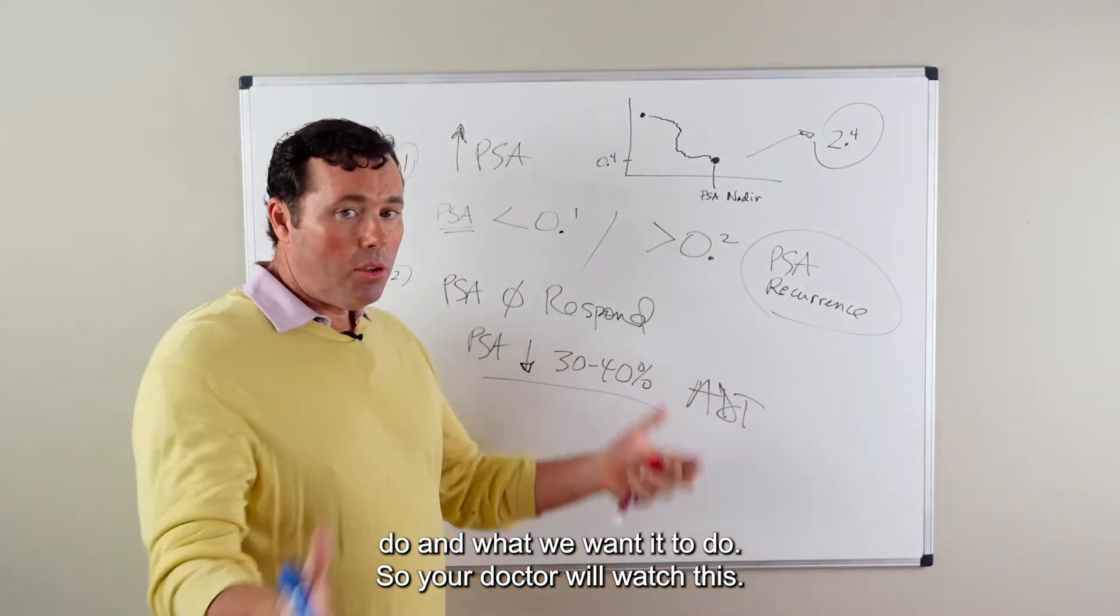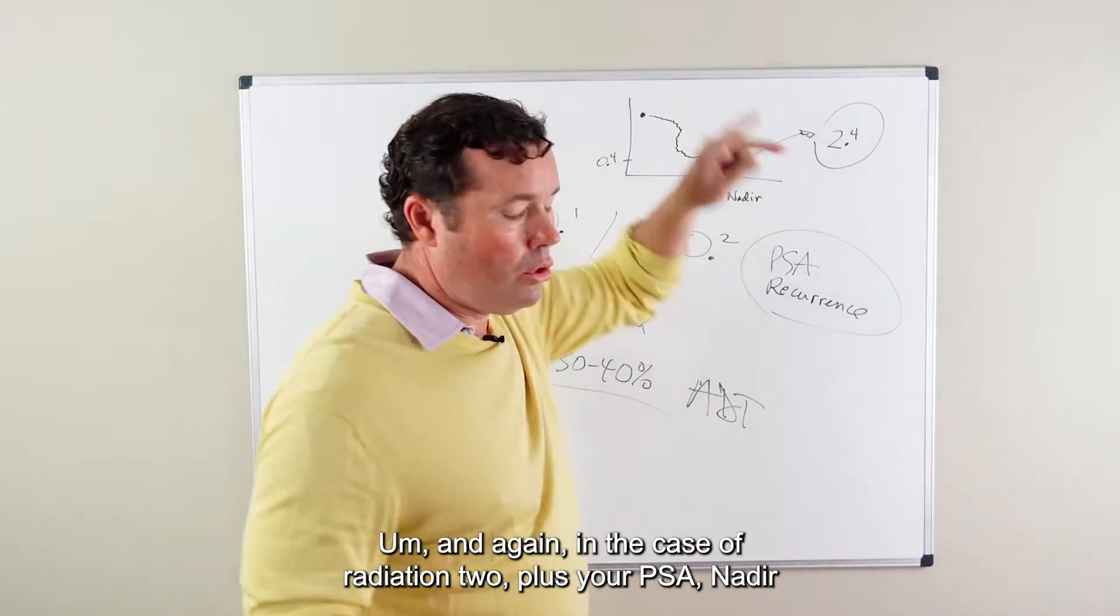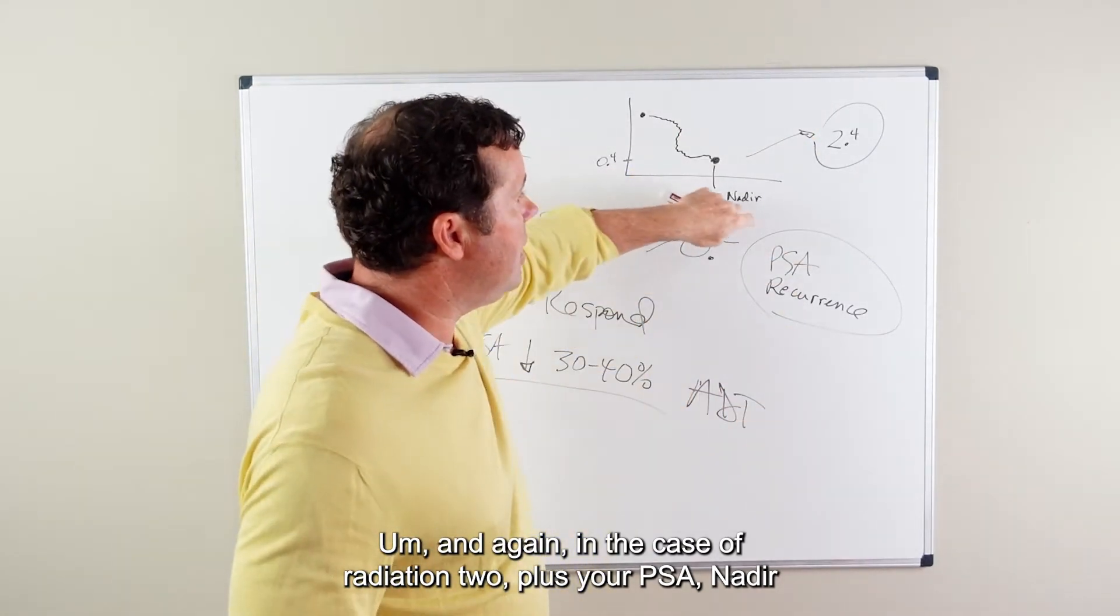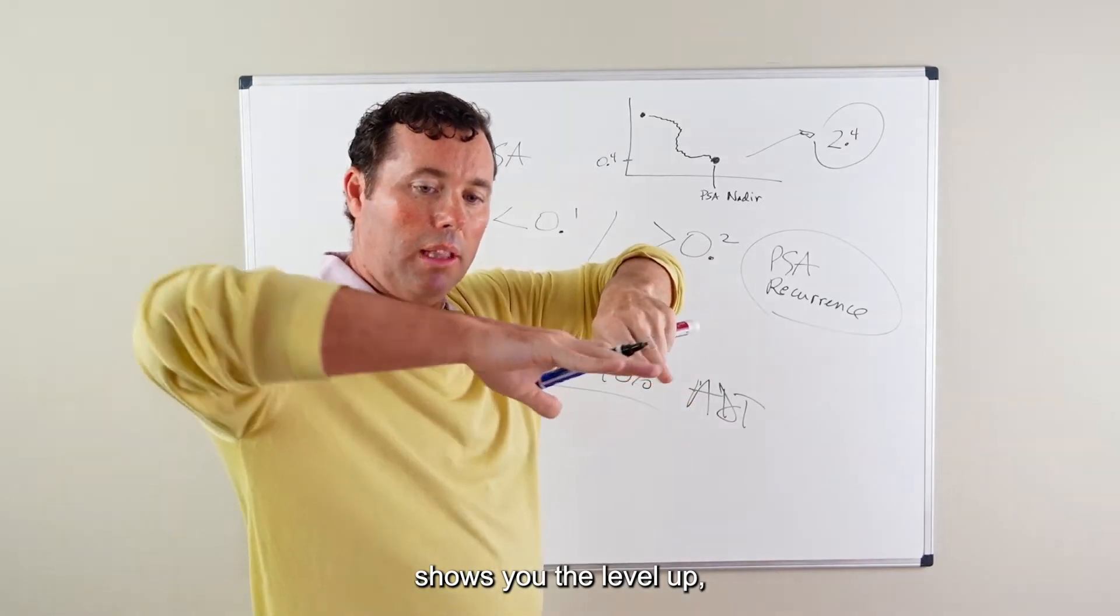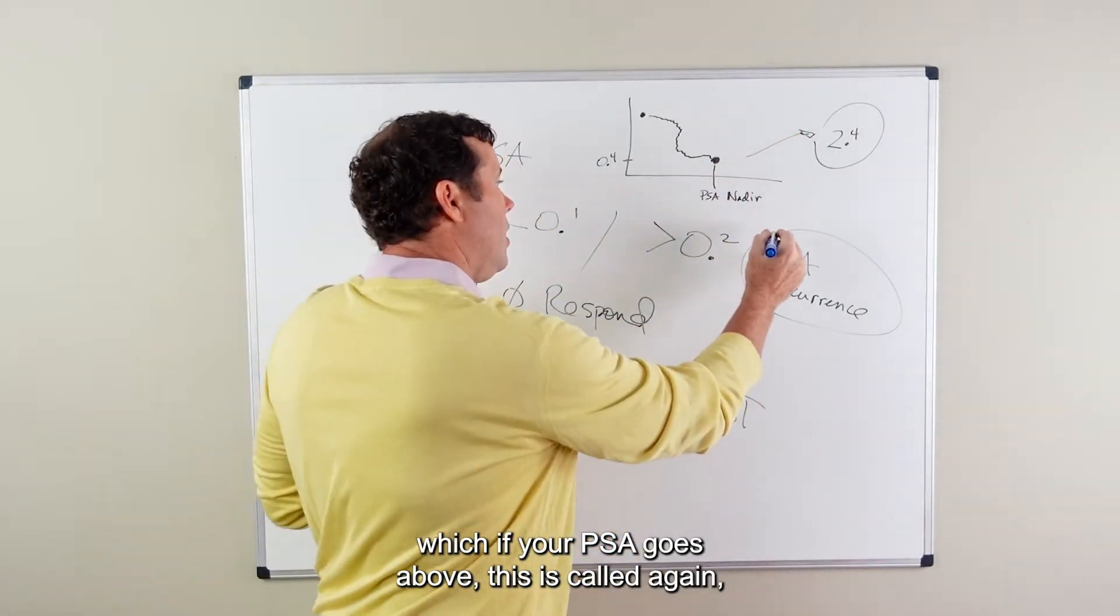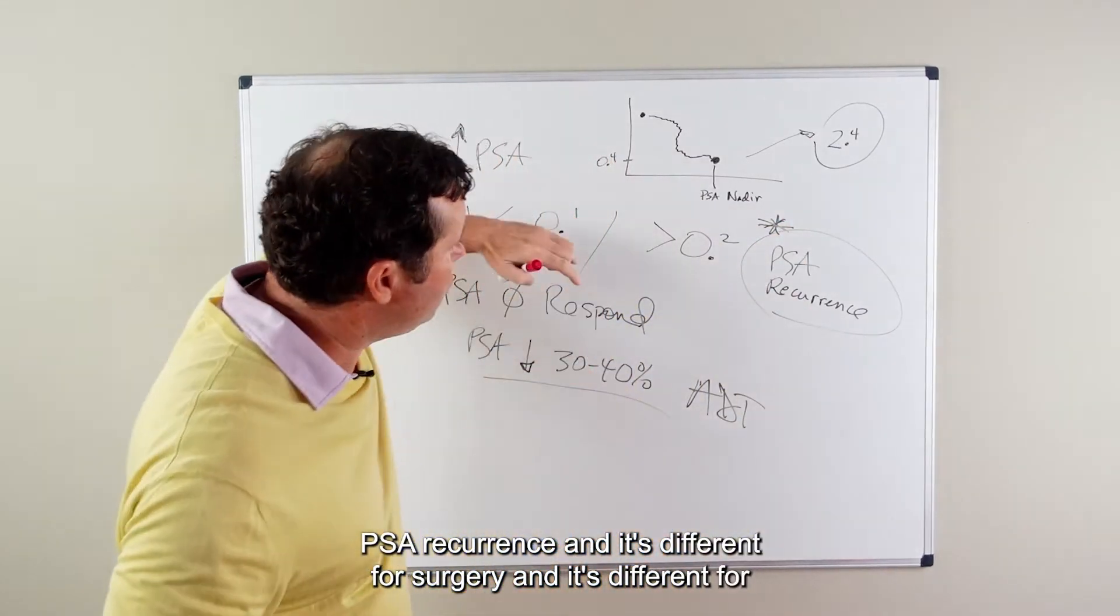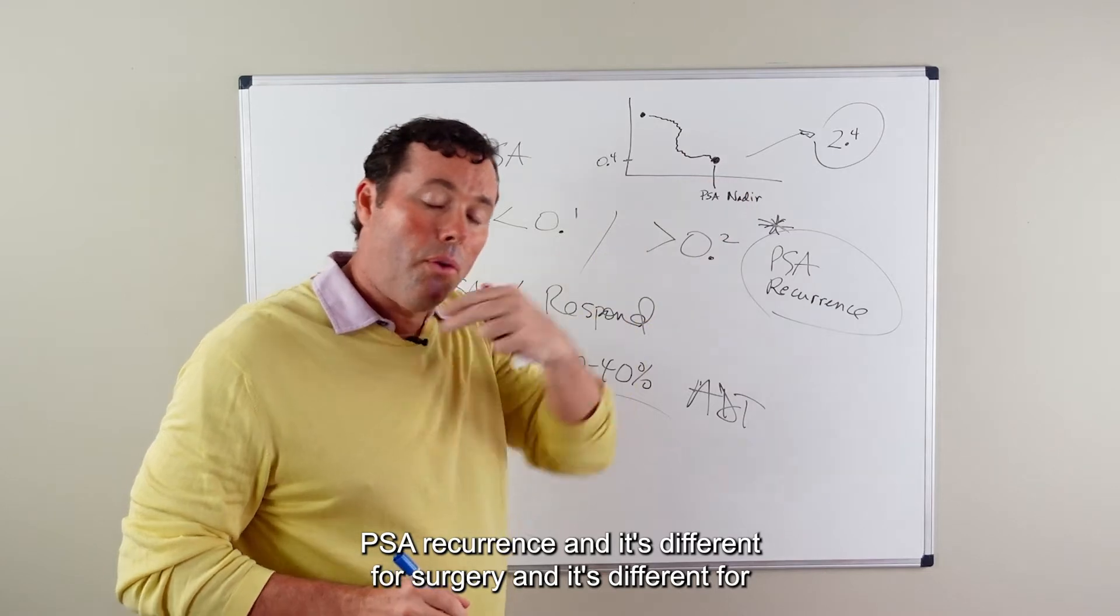So your doctor will watch this. And again, in the case of radiation, two plus your PSA nadir shows you the level at which if your PSA goes above, this is called again, PSA recurrence. And it's different for surgery and it's different for radiation.